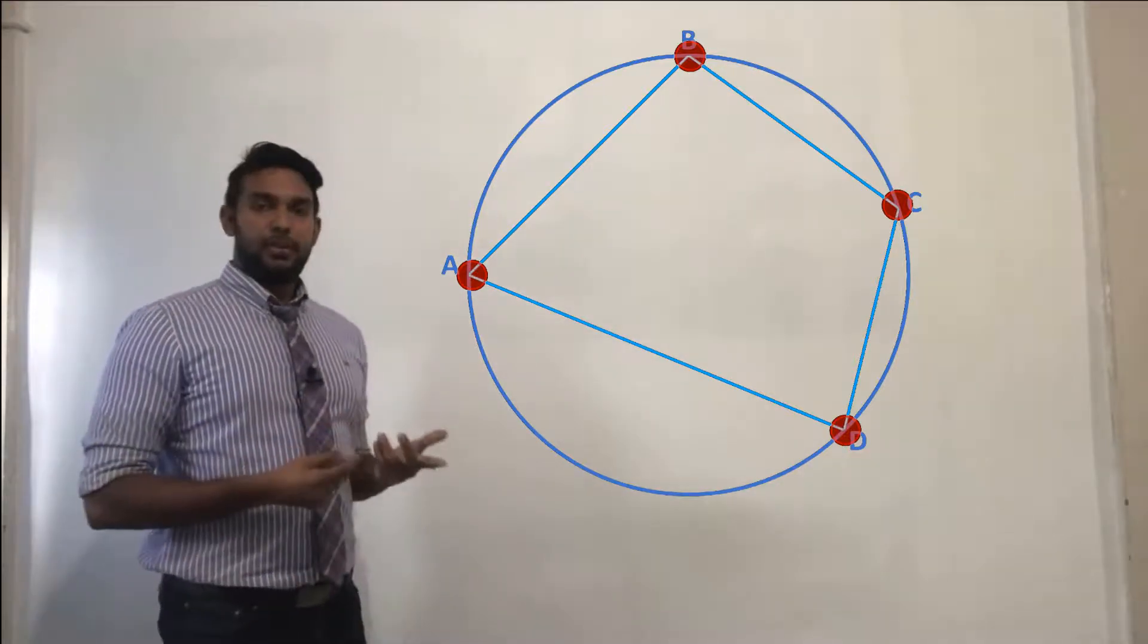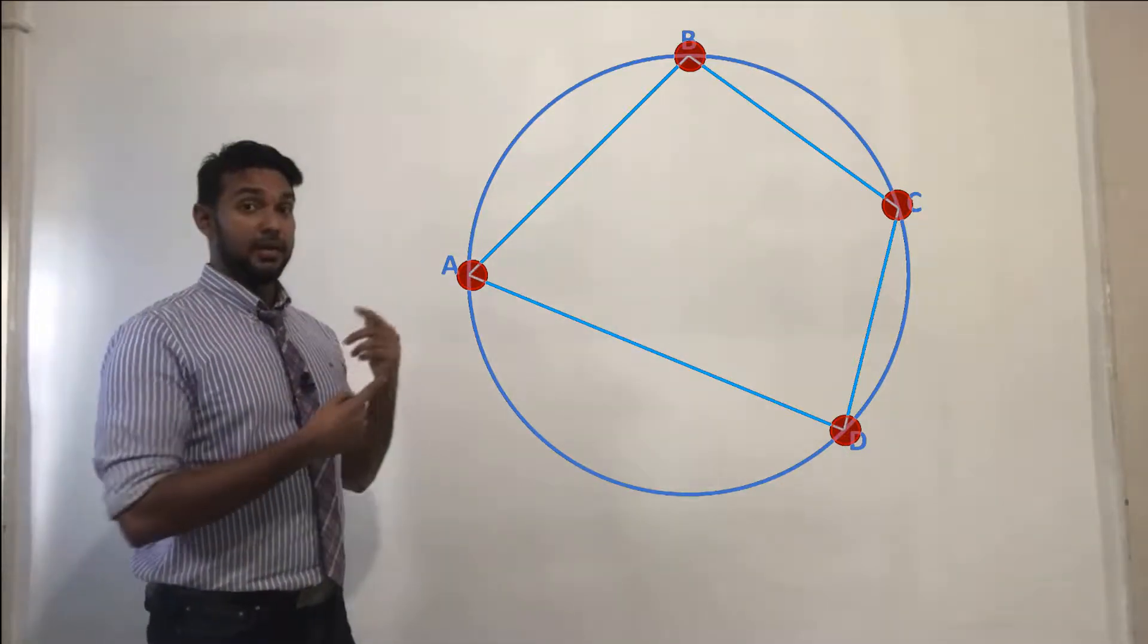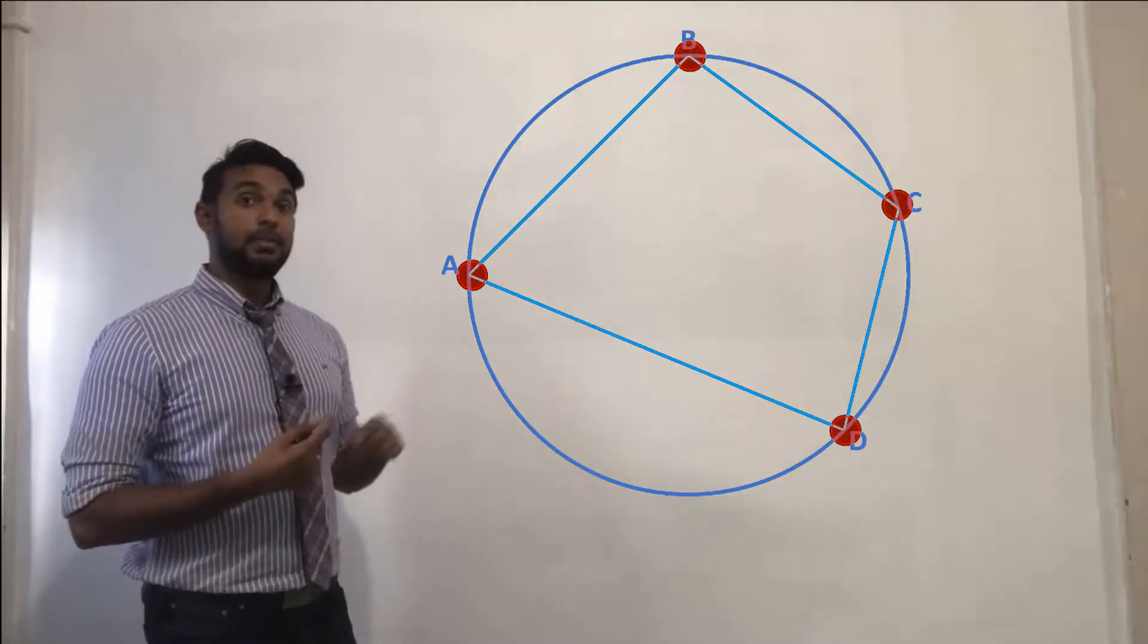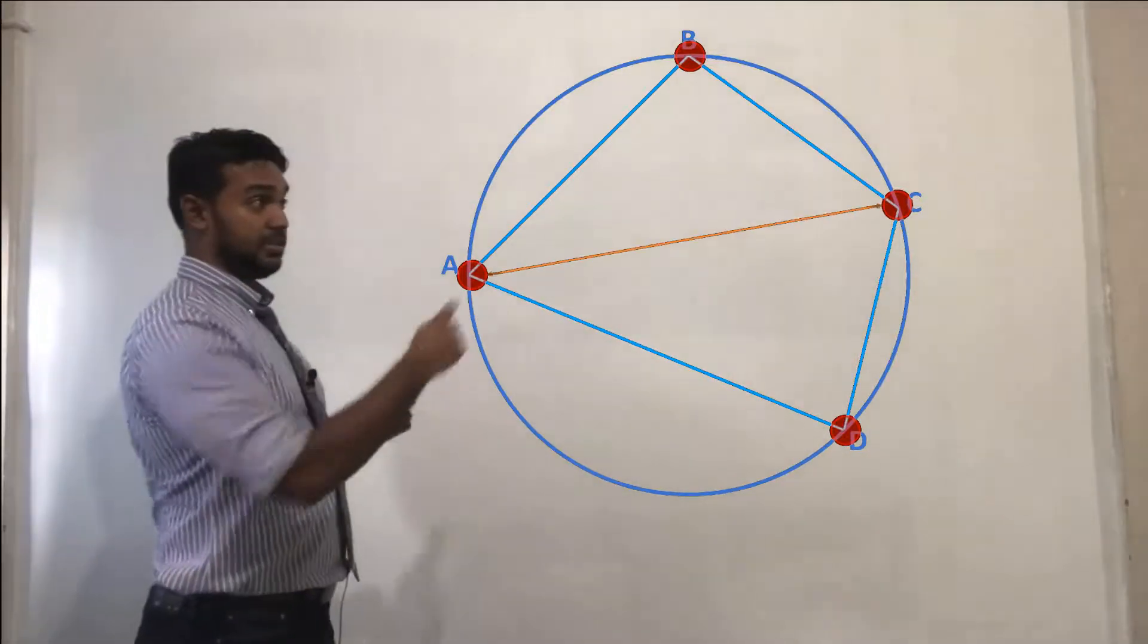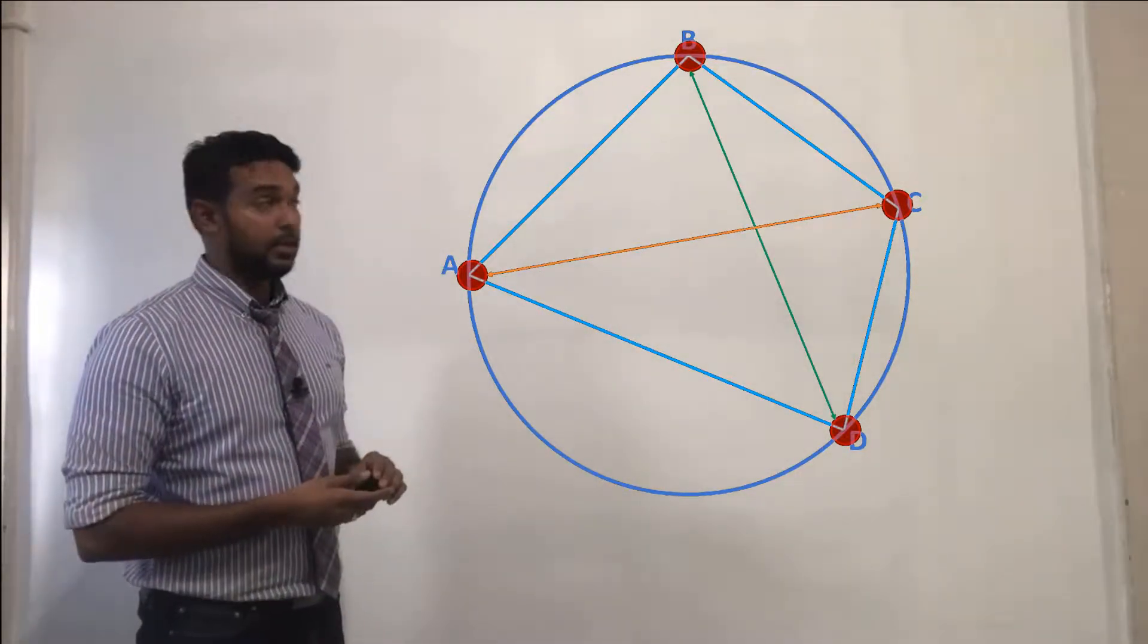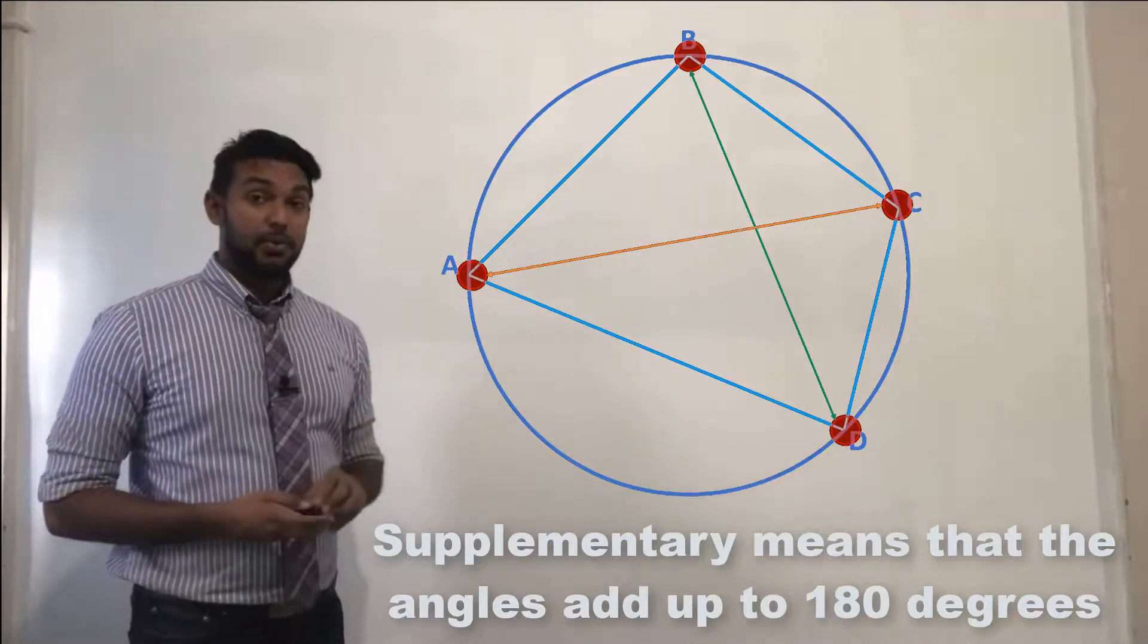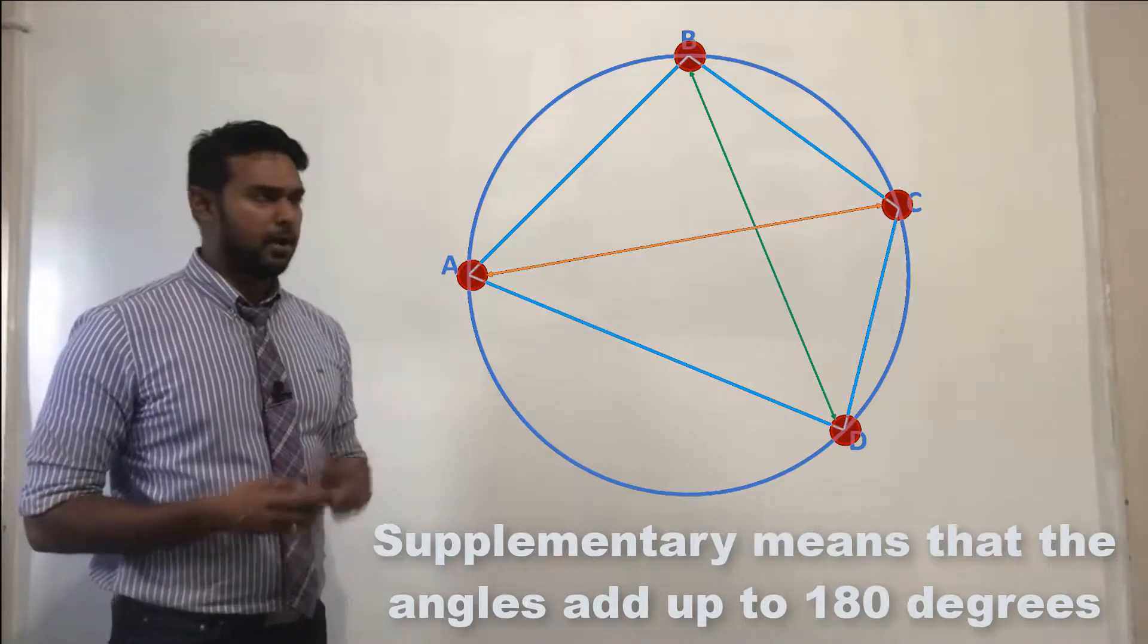Now, what is the rule that we're trying to apply here? That the opposite angles of a cyclic quadrilateral are supplementary. So opposite angles in this case are A and C and B and D. And supplementary means that they add up to 180 degrees. Now, how are we going to prove that?